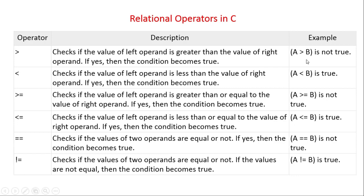For example, if the value of A is 10 and the value of B is 20: A > B means 10 > 20, which is false. Then 10 < 20 is true. 10 >= 20 is false. 10 <= 20 is true. 10 == 20 is false because 10 and 20 are not equal. And 10 != 20 is true because they are not equal.